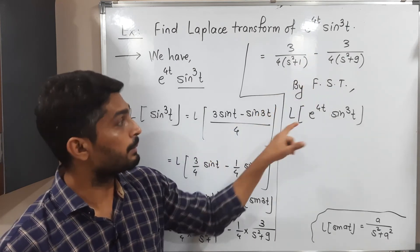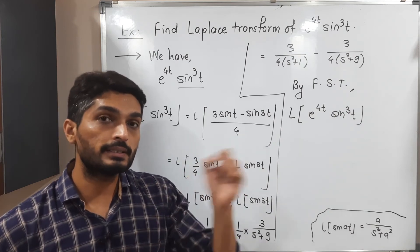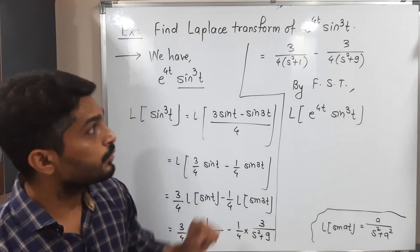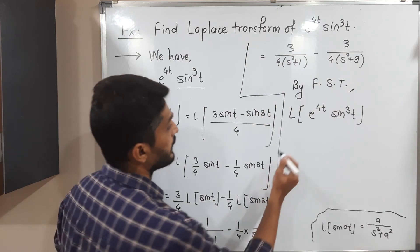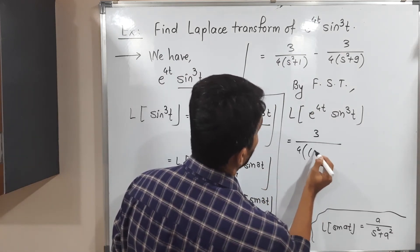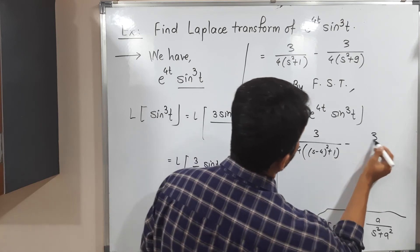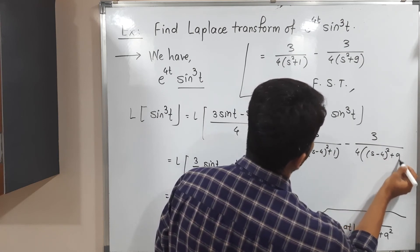So we replace s by, can you tell me? We replace s by s minus 4 since e^(4t) is there. If plus is there, we write s minus 4. And if minus 4 is there, we write s plus 4. So everywhere I will replace s by s minus 4. So it will look like this: 3/4[(s-4)^2 + 1] minus 3/4[(s-4)^2 + 9].